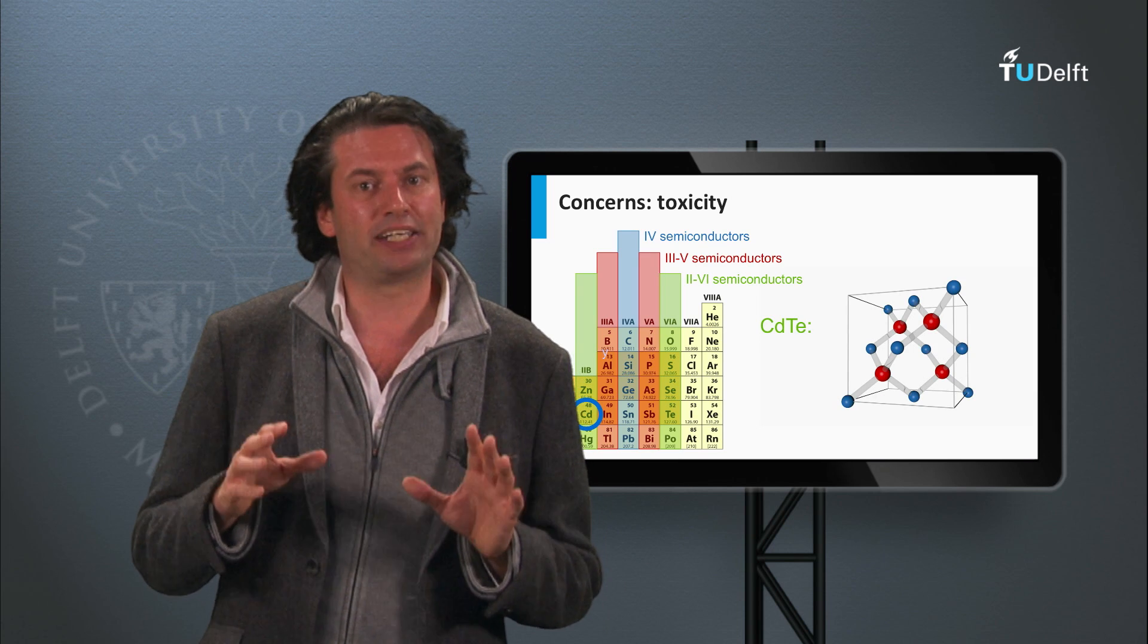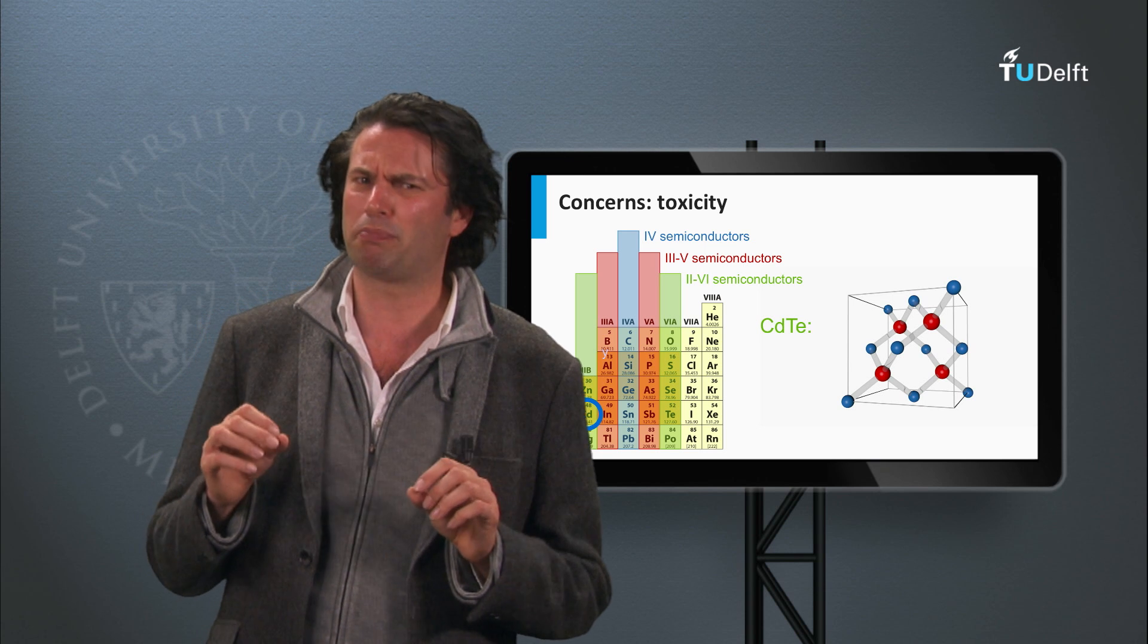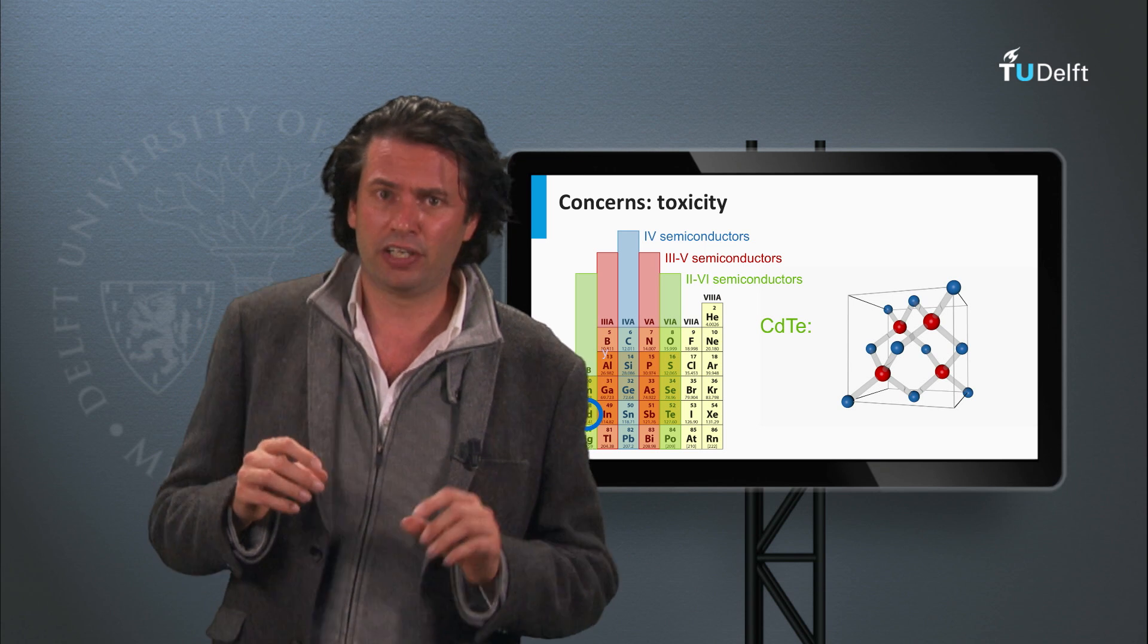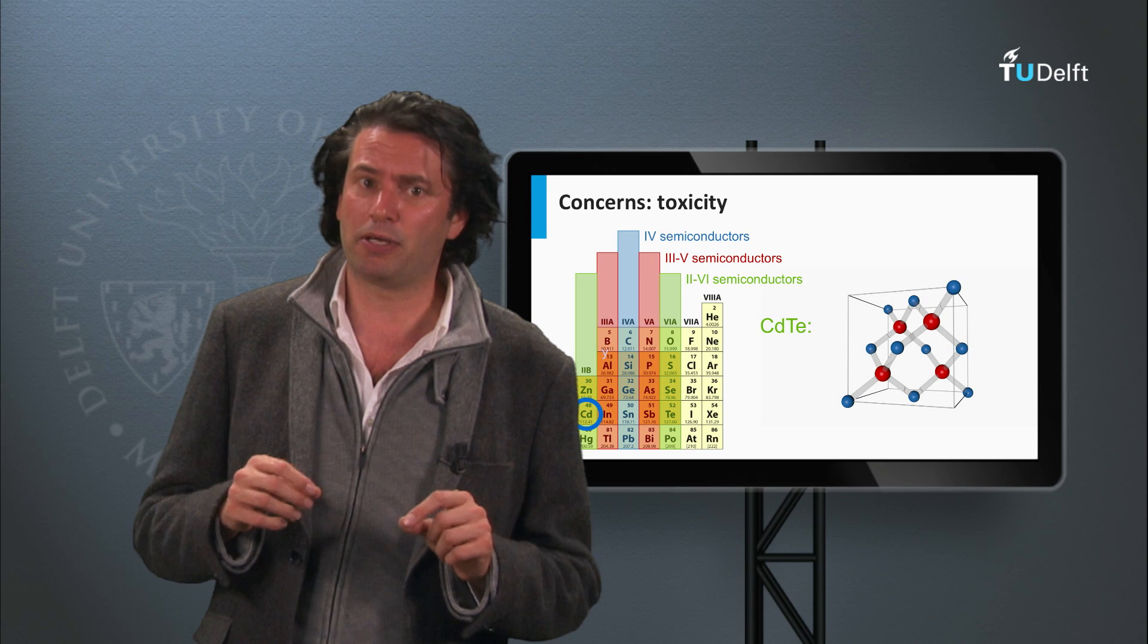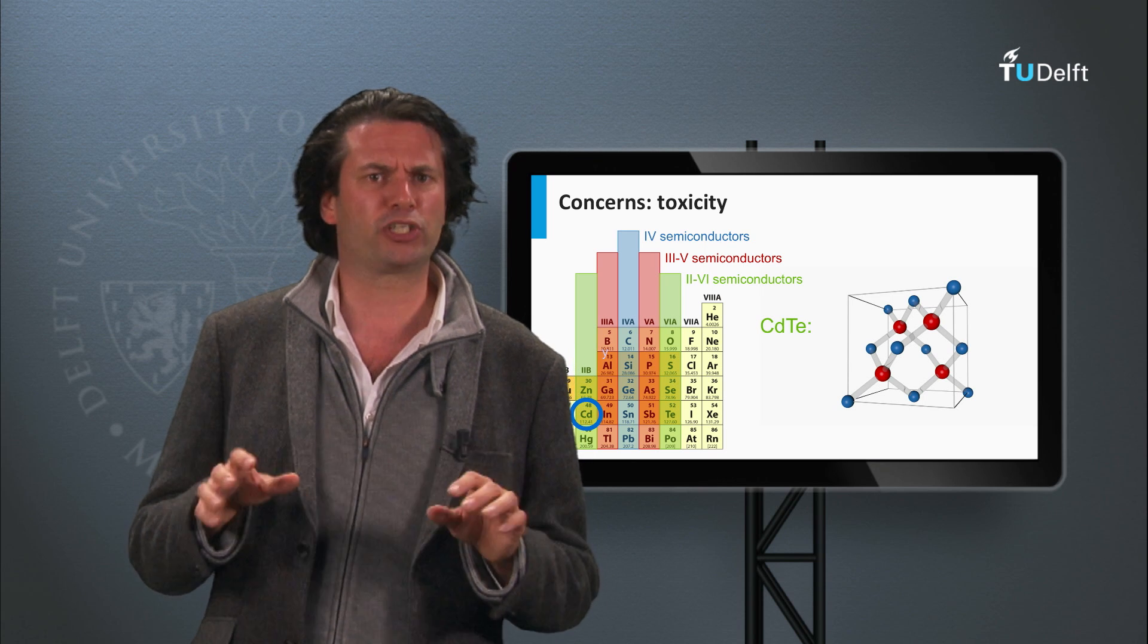An important aspect to be addressed is that the cadmium telluride solar cells contain the toxic material cadmium. However, the insoluble cadmium compounds like cadmium telluride and cadmium sulfide are much less toxic.